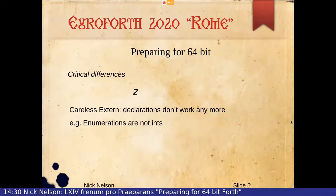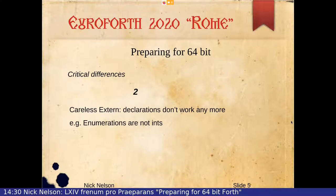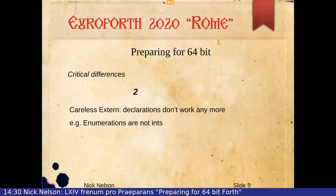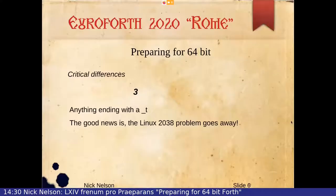The second critical difference we identified is that we were happily adding lots of external declarations for library functions, and we were perhaps a tiny bit lazy — instead of accurately creating all the new types necessary for declaring external declarations, we were just using int all over the place. That doesn't work anymore because some of them are actually not ints; they're all sorts of different things. In particular, enumerations are not ints anymore.